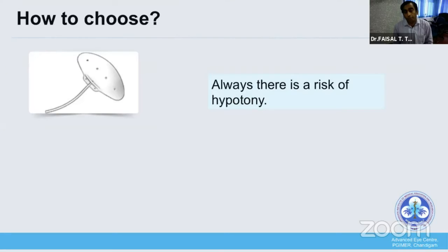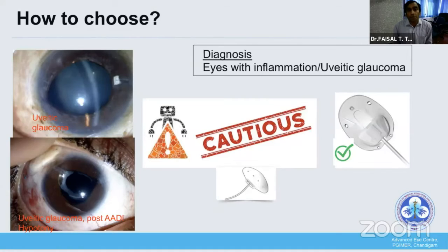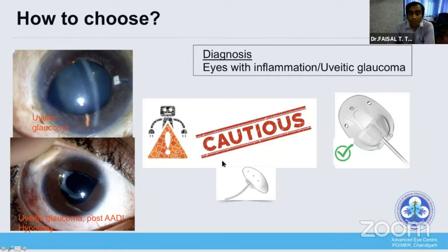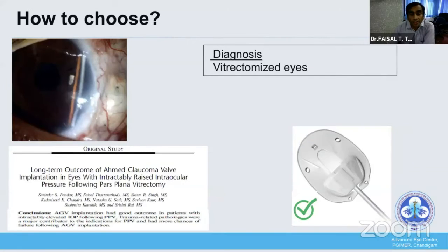ADI always carries a risk of hypotony, and some eyes are more prone to hypotony postoperatively. One should know the diagnosis properly. Eyes with inflammation or uveitic glaucoma require a non-valve device to be used very cautiously, as patients can present with hypotony even years after surgery — so one should prefer a valved device. Similarly, aphakic eyes also have a high tendency for hypotony, so valved devices should be preferred.